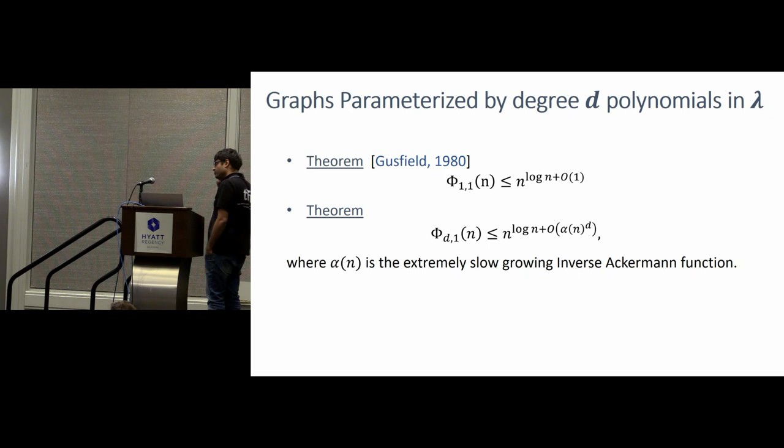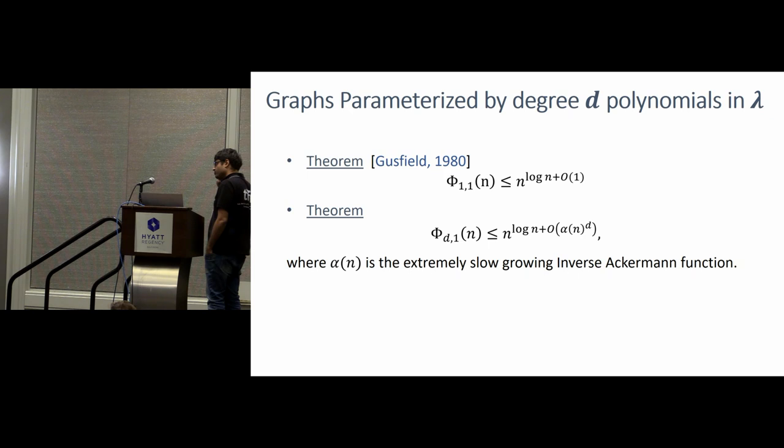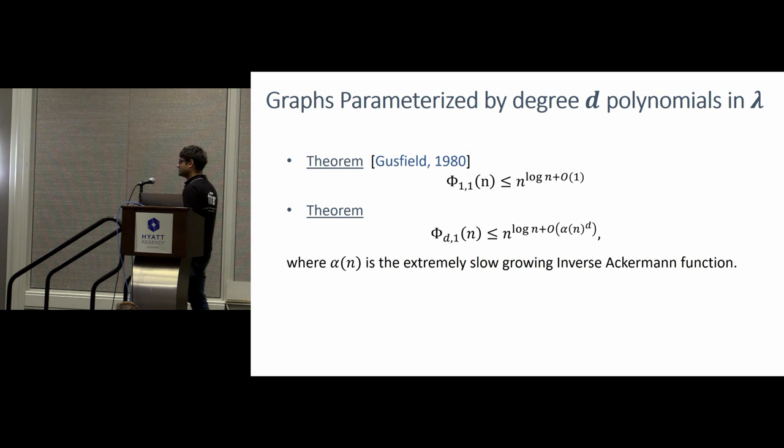So, just an extension of these, so far, in the entire proof, whatever I mentioned, our edge weights were linear polynomials in lambda. What if you're looking at, what if the cost of the roads are degree d functions of time. And turns out, it's not much more than what you would get for linear anyway. So, n raised to log n is the same as before. Earlier, you had something plus a constant. Here, you had plus something which is barely a super constant. This is the inverse Ackermann function, and for any practical value of n, it is at most 5.